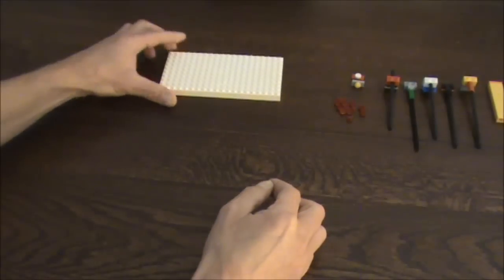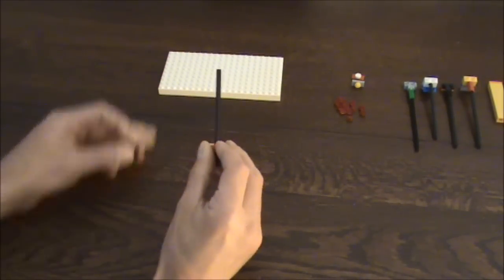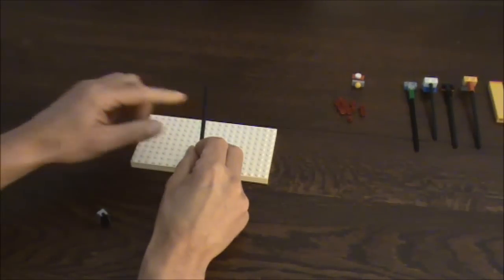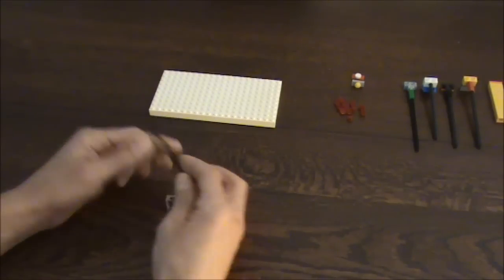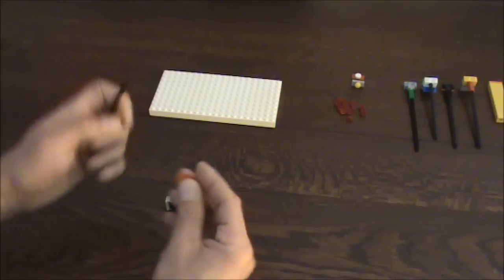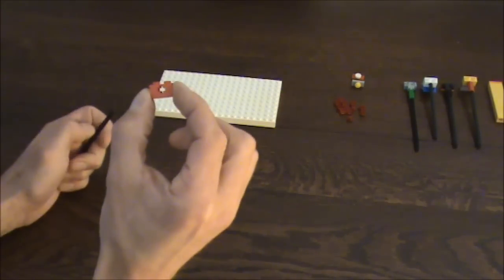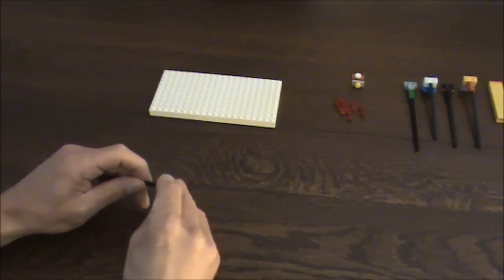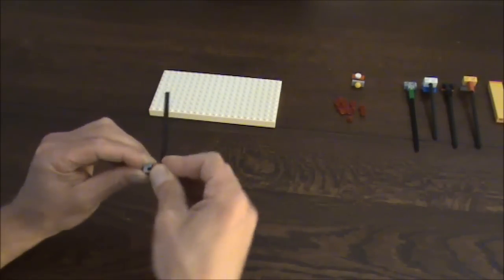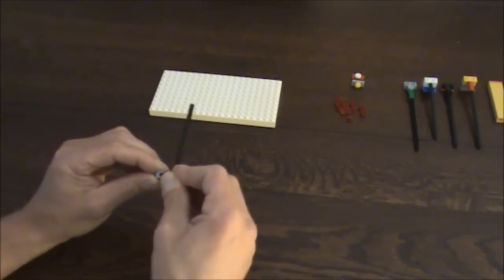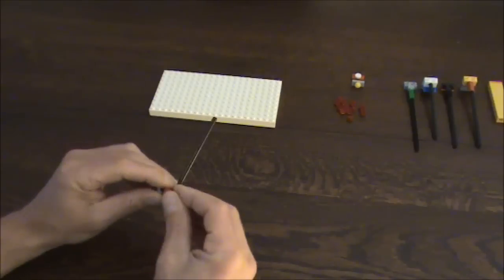Next thing we should do is a Gnomon. Gnomon is an arm which will put shade on our dial face. Take a stick, a hollow block and that's pretty much it. Just put it on the adjustable block so we can later on choose the right inclination.